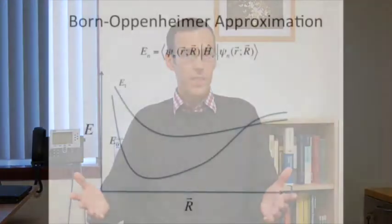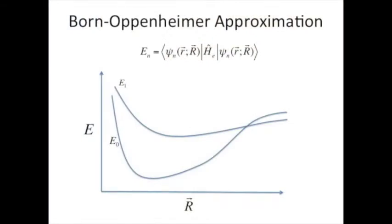What is a potential energy surface? It is defined by the Born-Oppenheimer approximation, which separates the motion of the nuclei and the motion of the electrons in a molecule.